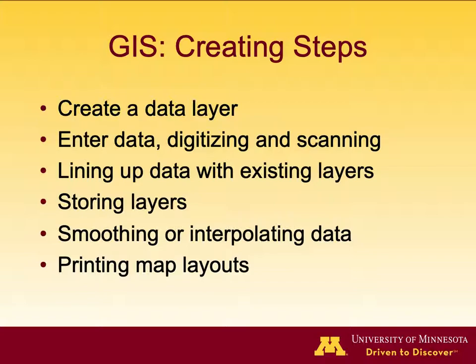The steps of creating a GIS include: first, create a data layer; then enter data either by digitizing, scanning, or downloading; then line up data with existing layers; then store the layers; then smooth and interpolate the data to get a full map; and finally print the map layout with all necessary items like the title, north arrow, legend, scale bar, and data source.